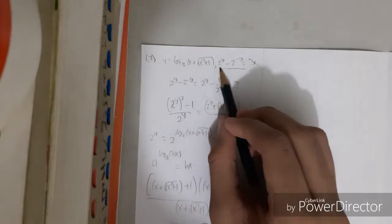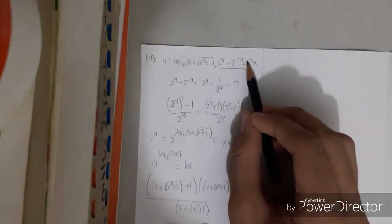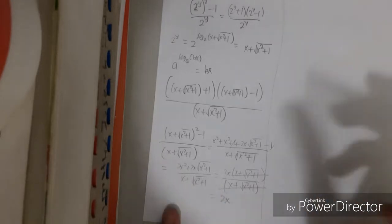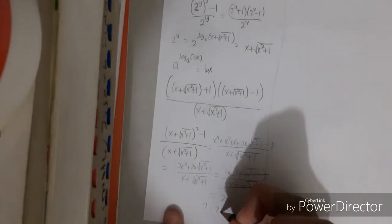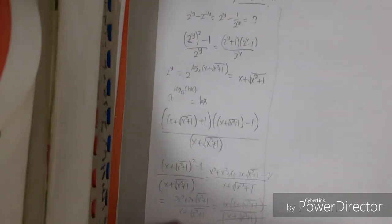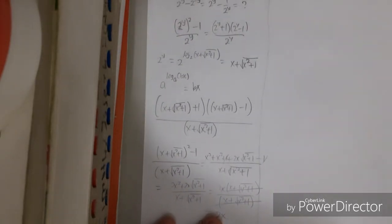So let me review the question: y equals logarithm of something, and 2^y minus 2^(-y) equals what times x? Yeah, it's 2x, so the answer is 2. That is number three, and next video will be number four.